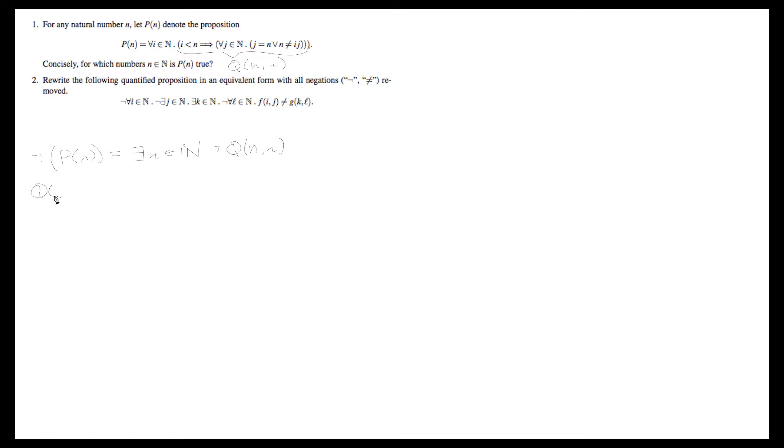Then we can look at when Q of n i is false. When i is less than n, but this other piece, which we will just call R of n i, is false. And this is just because of what we know about implications. We know that implications are false if the first part, the P part, is true, but the second part, the Q part, is false. So this is just straight from the definition of true and false, or the truth table for implications.